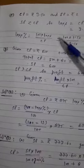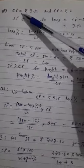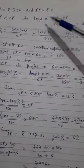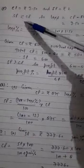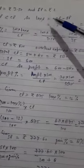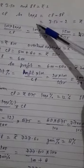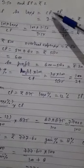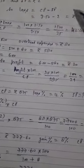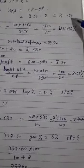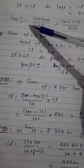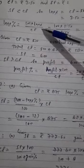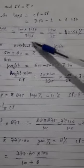Next, part B: CP and SP are given. So here SP is less than CP, it means loss will be there. Loss is equal to CP minus SP, rupees 1.5. Now loss percent: 100 into loss upon CP. After putting the value we will get 42.86 percent.